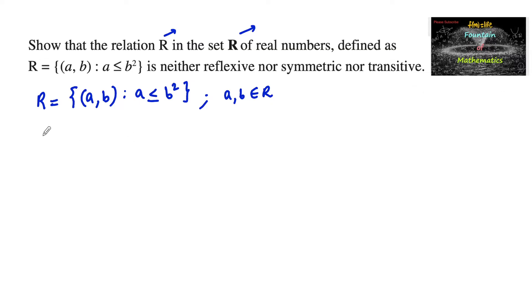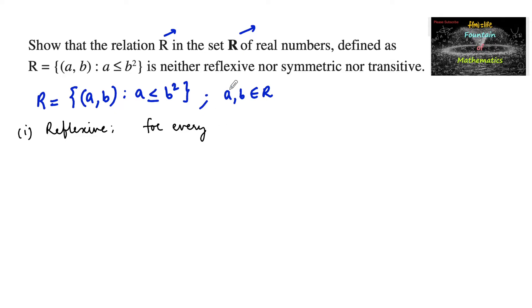Let us check for reflexive. The condition for reflexive is: for every element from the set, that is for every a belonging to R, (a, a) must belong to the relation. This is the reflexive condition.